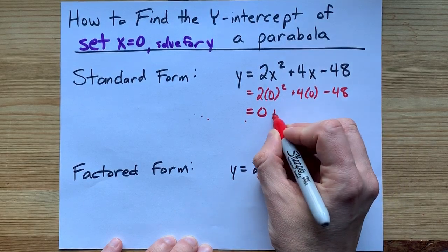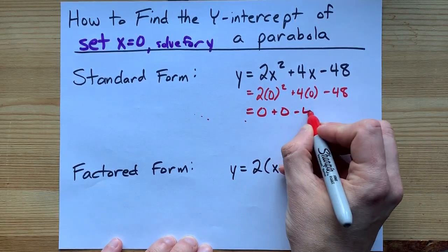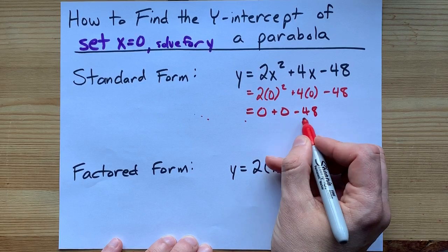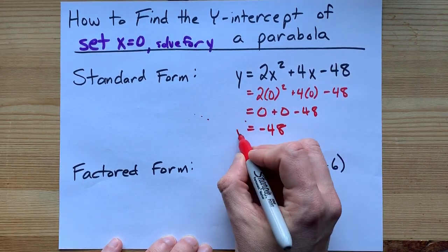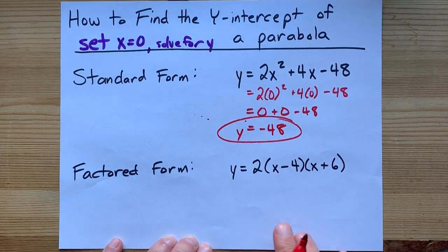4 times 0 is 0, and then you can take away 48. 0 plus 0 minus 48 gives you negative 48. Your y-intercept is negative 48. Done!